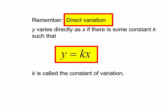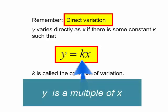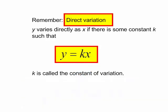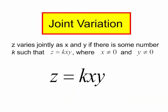Remember direct variation? y varies directly as x if there is some constant k such that y equals k times x. And k is called the constant of variation. So joint variation just takes that one step further.